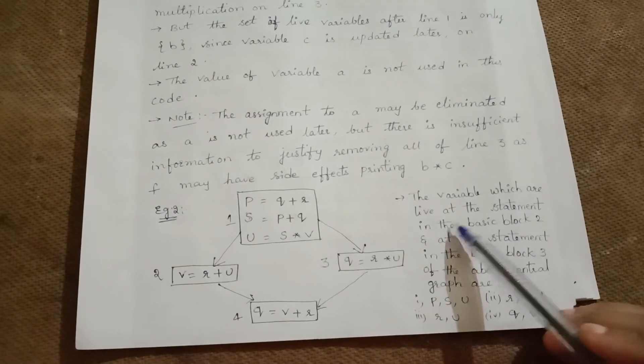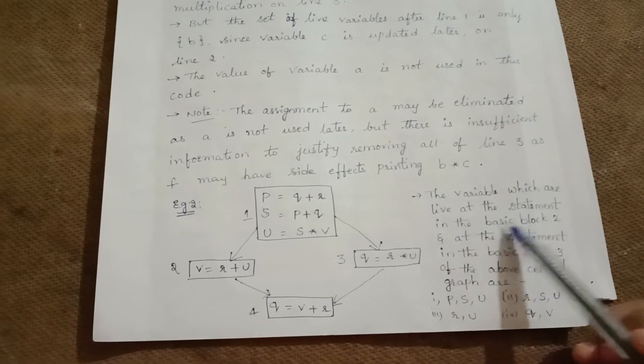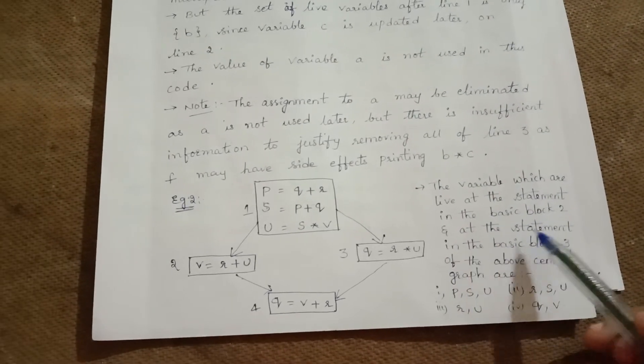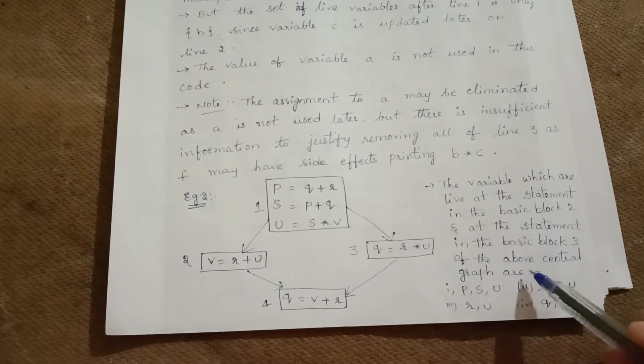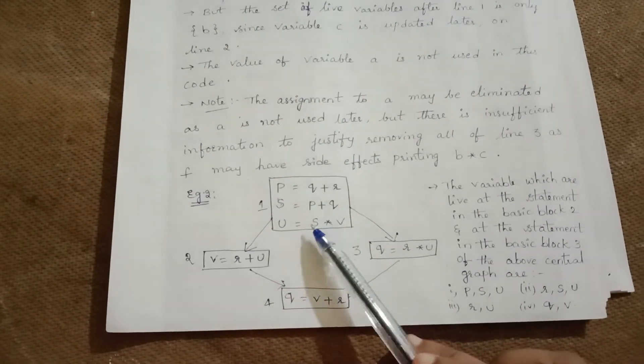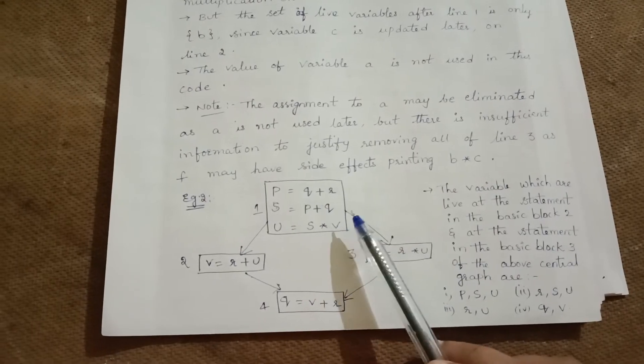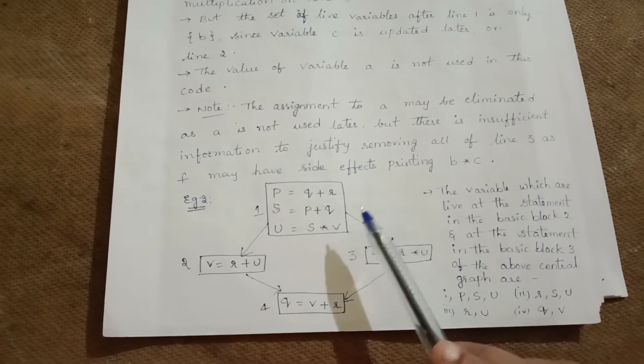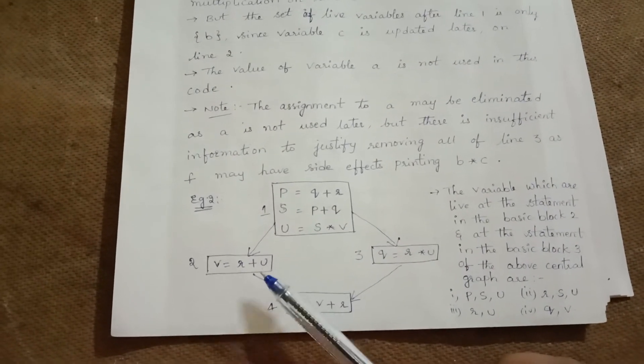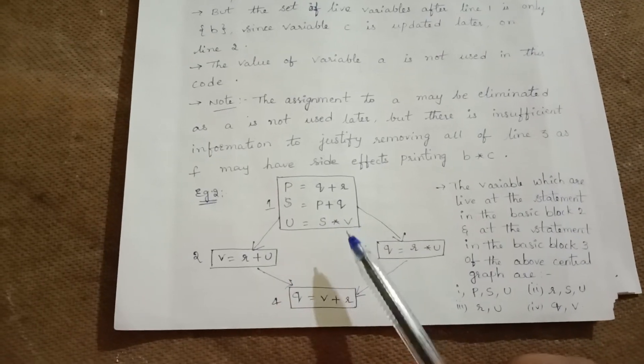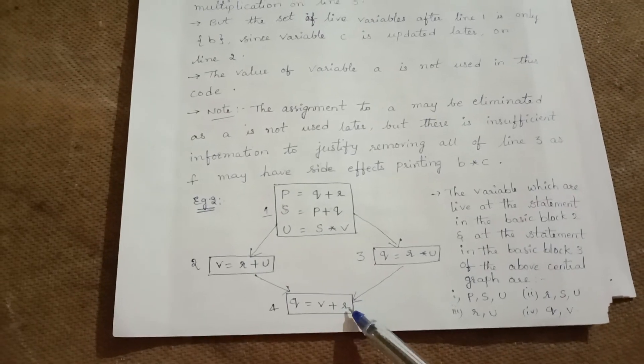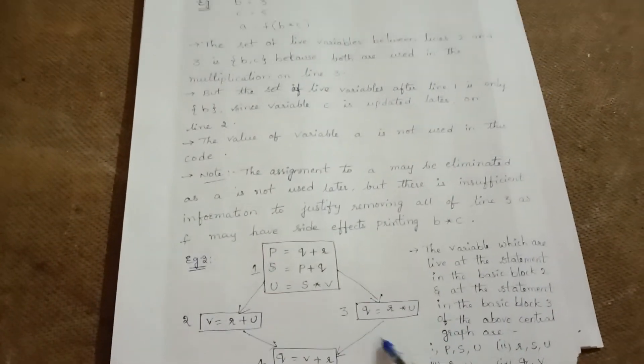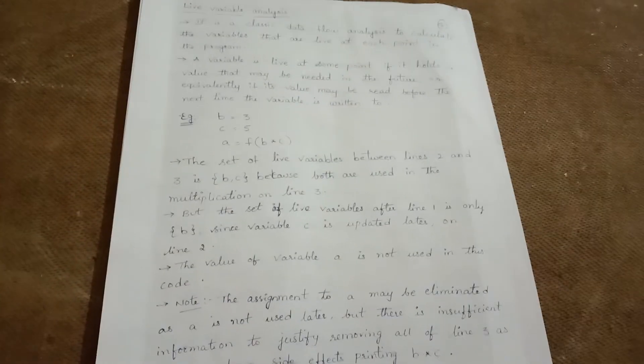The variables which are live at the statements in the basic blocks are: In block 1, p, s, and u are live. In block 2, r, s, and u are live. In block 3, r and u are live. In block 4, q and v are live. This is all about live variable analysis.